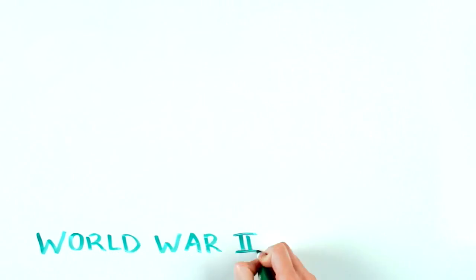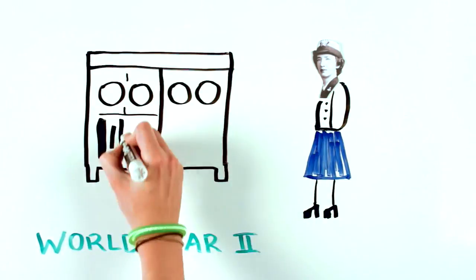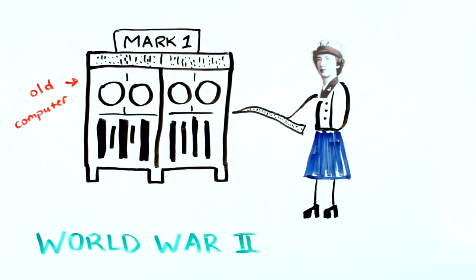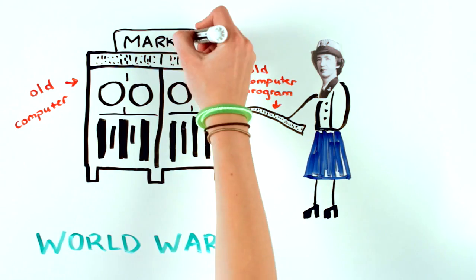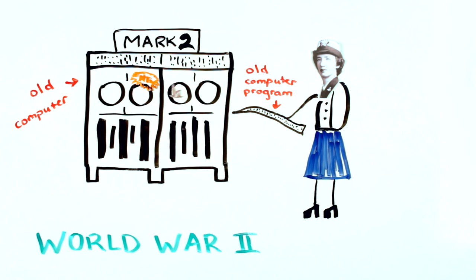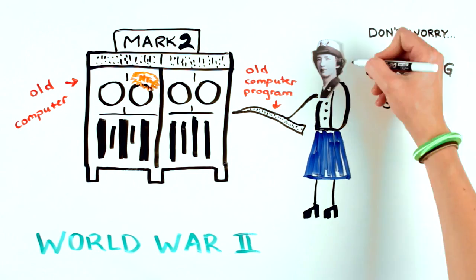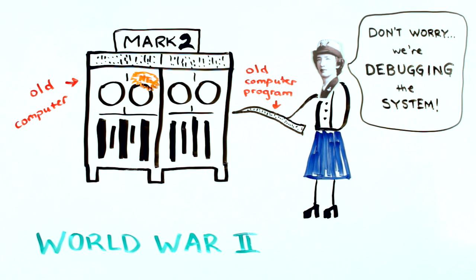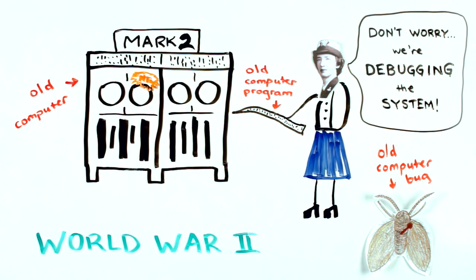During World War II, Grace joined the U.S. Navy Reserves as part of the Mark I computer programming staff. While working on the Mark II computer, a pesky moth was stuck inside. Grace remarked that they were debugging the system. Today, we still debug computer programs and Grace's moth is preserved at the Smithsonian.